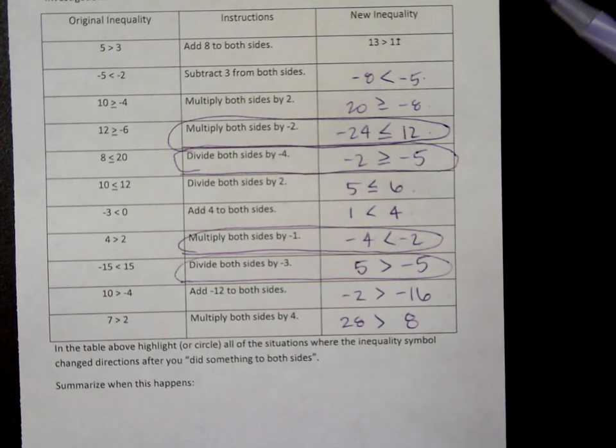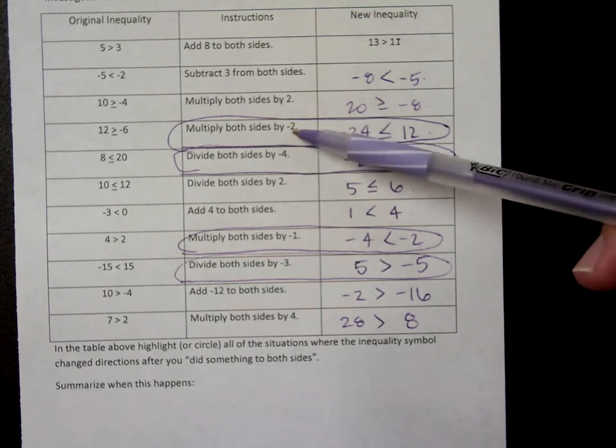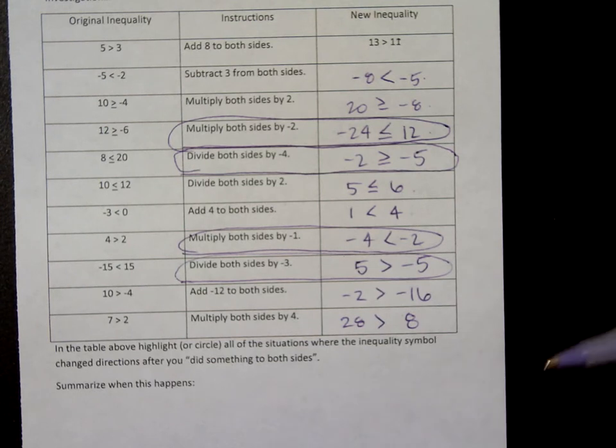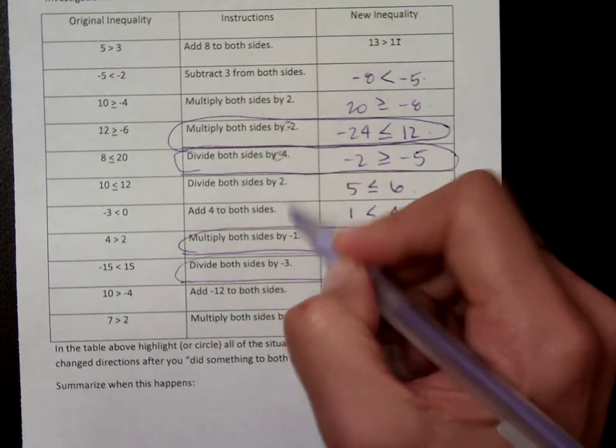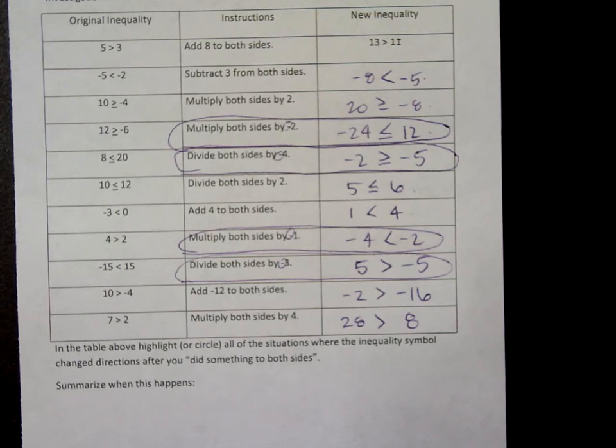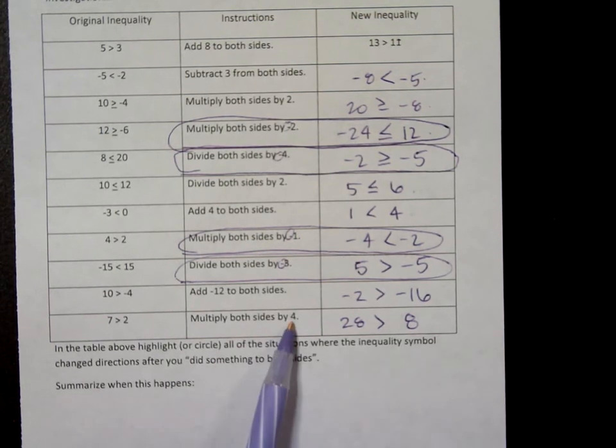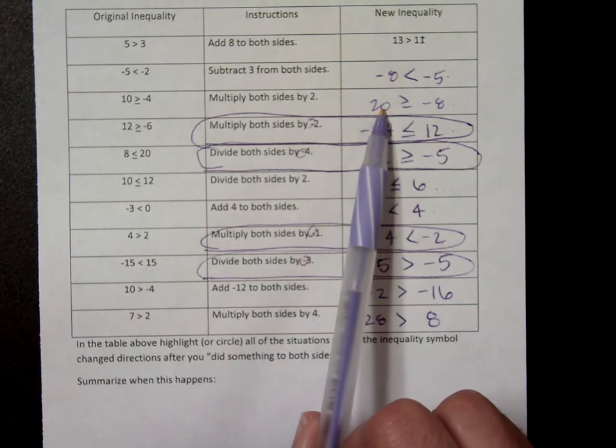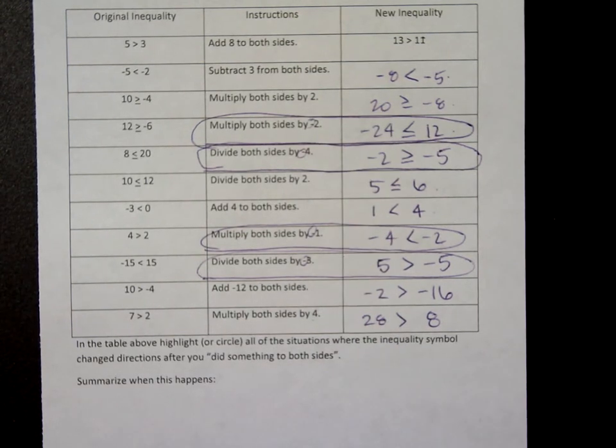What were we doing when we had to reverse the symbol? Well, we were multiplying or dividing, for one. But what kind of number were we multiplying or dividing by? What do all of these numbers have in common? They're all negative. Notice, when we multiplied by positive numbers, like the very bottom one, we didn't change the sign. When we divided by a positive number, like this middle one, we didn't change the sign. When we multiplied up here by a positive number, we didn't change the sign. So the other rule for inequalities is when you divide or multiply by a negative number, you have to reverse the sign.